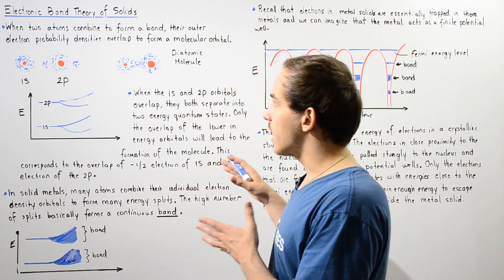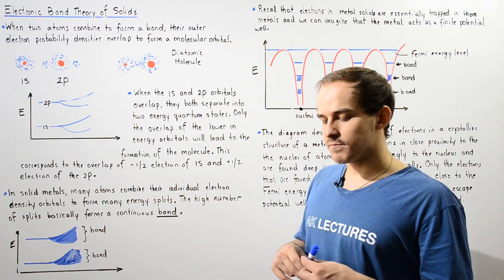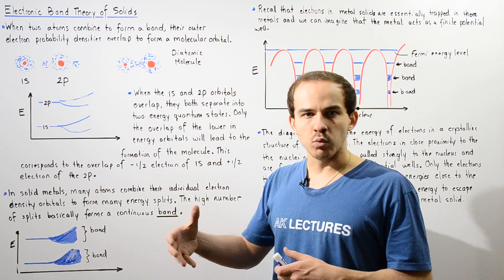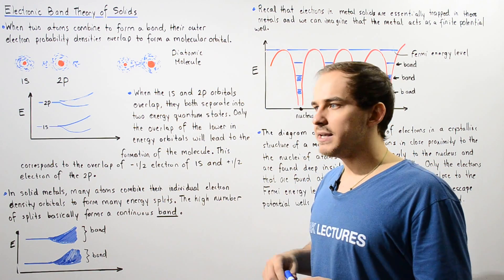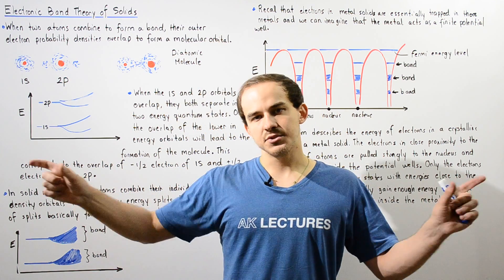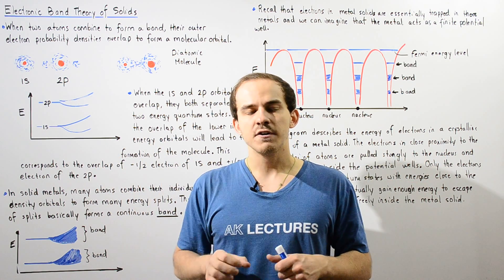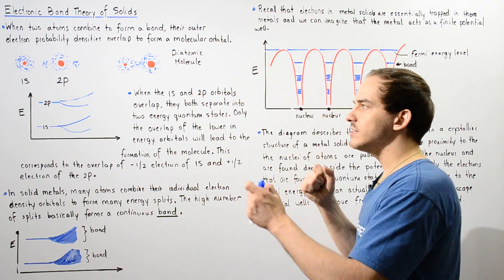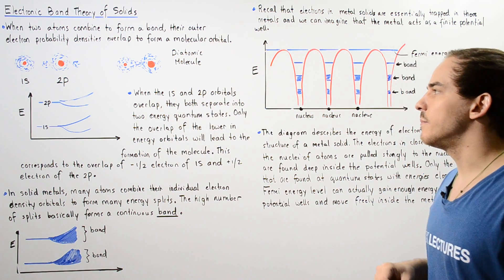Before we discuss what the band theory actually is, let's recall how chemical bonds are formed. Suppose we have two individual atoms: the electron in one atom is found in the 1s quantum state, and the electron in the second atom is found in the 2p quantum state. We bring those atoms close to one another until their electron probability densities begin to overlap, forming a chemical bond and a diatomic molecule.